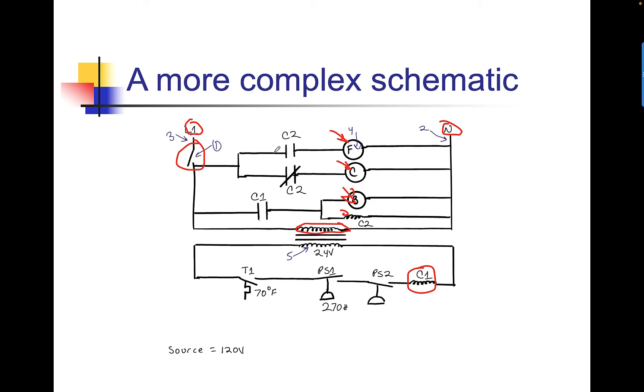Everything else in here, anything that I haven't mentioned, like the lines, which are relay contacts, my thermostat, labeled T1, I have a couple pressure switches in here. These are all switching devices. So, again, my four parts of a circuit that I have to have is very well represented here.